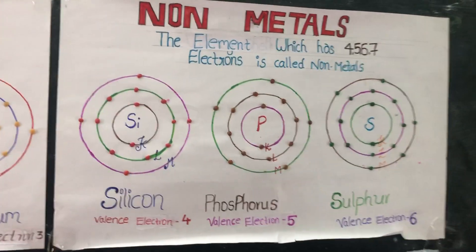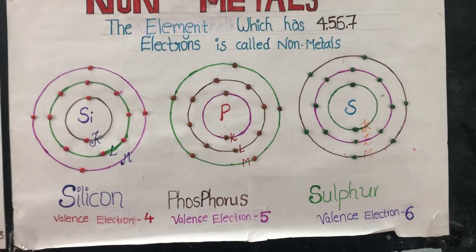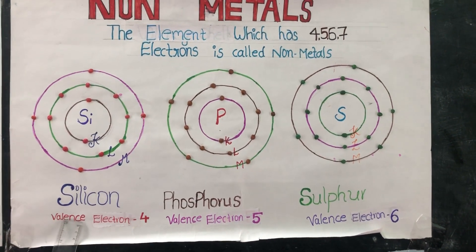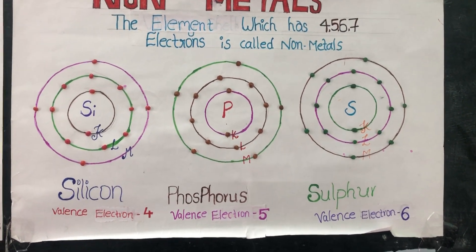Non-metals. The elements which have 4, 5, 6, or 7 valence electrons are called non-metals. Here the examples are silicon, phosphorus, sulfur, and noble gases.